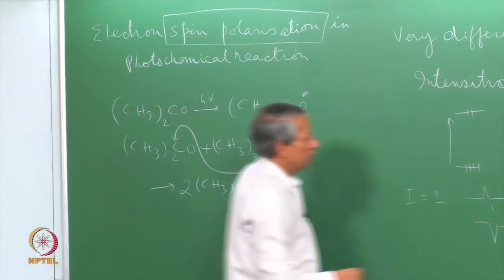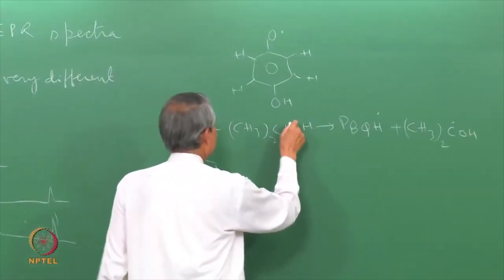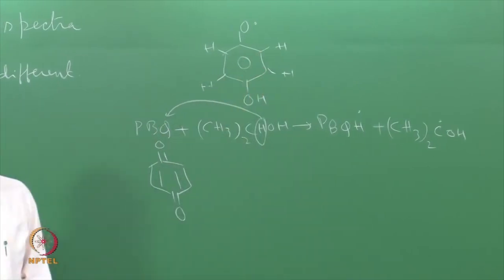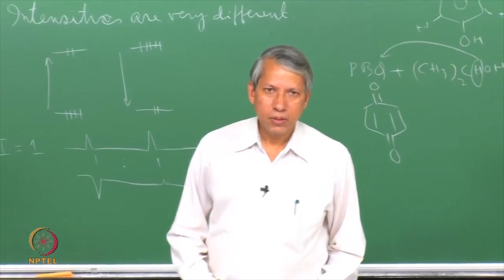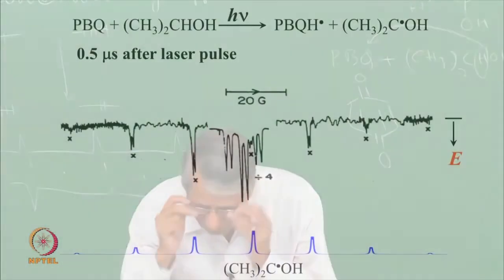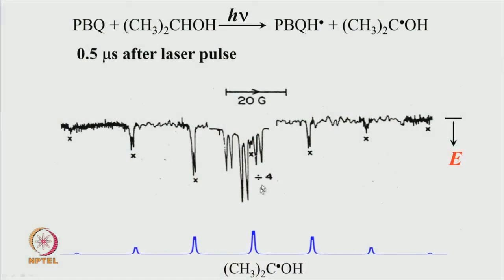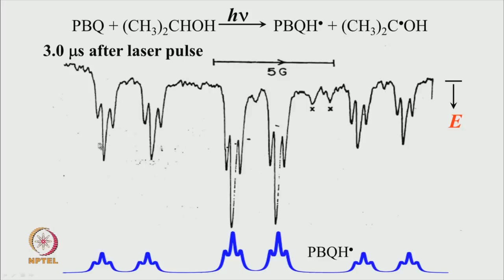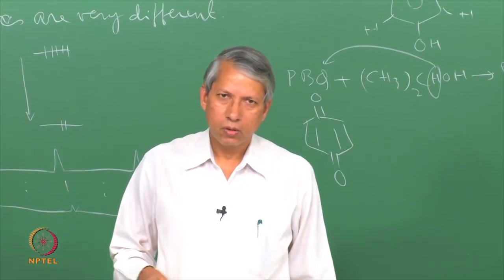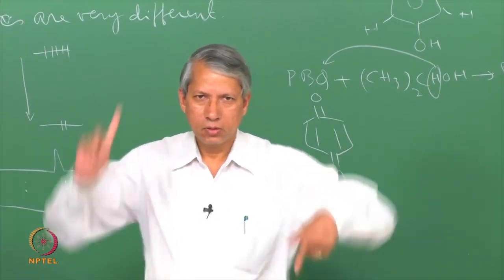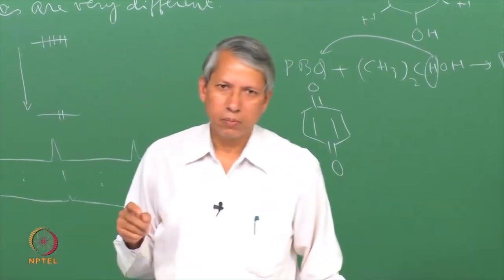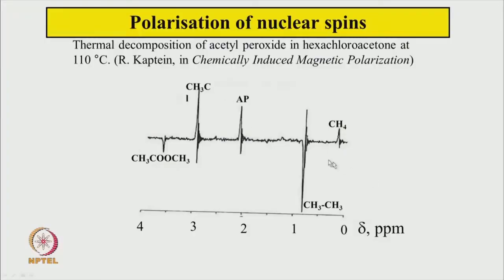Chemically there is no difference — hydrogen transfer occurs in both systems. There is some difference in the way spins are populated in the two cases. To confirm that these lines are indeed from the semiquinone radical, an expanded view matches exactly with the expected spectrum. Now, recalling the 1963 observation by Fessenden and Schuller, later in the early 1960s NMR experiments showed many such signals. Let us see one of them.